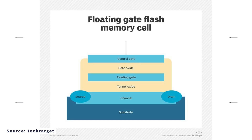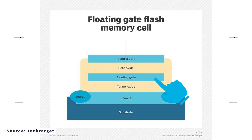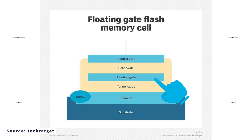They use floating gate transistors to store information without a power supply. Simply put, the NAND memory contains two gates — the control gate and the floating gate — and to program a single cell, a voltage charge must be applied to the control gate. However, the floating gate traps the electrons as they move across the cell, where they can remain for years under normal operating conditions regardless of whether the chip has a power connection or not.